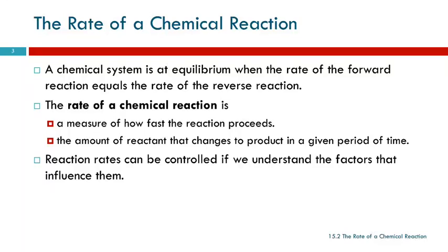A chemical system is at equilibrium when the forward reaction occurs at the same rate as the reverse reaction. The rate of a chemical reaction is like a rate of travel - it's how fast the reaction proceeds. You can measure that as the amount of reactant that gets changed into product in a given period of time. Reaction rates can be controlled if we understand what influences them.